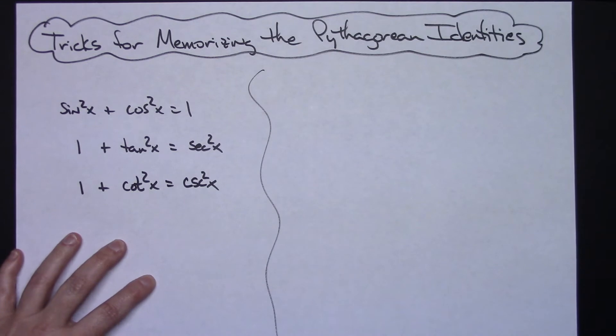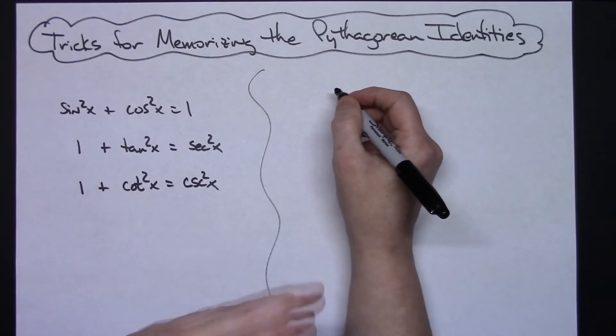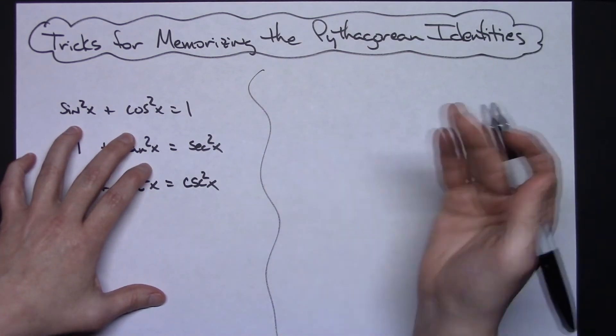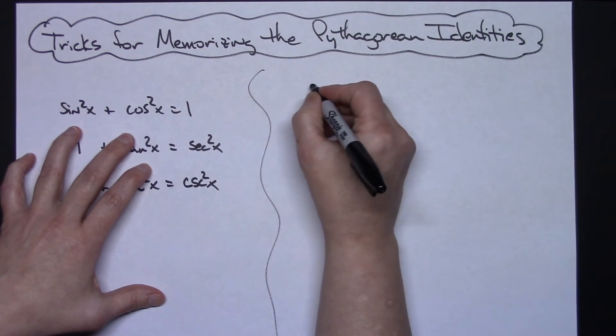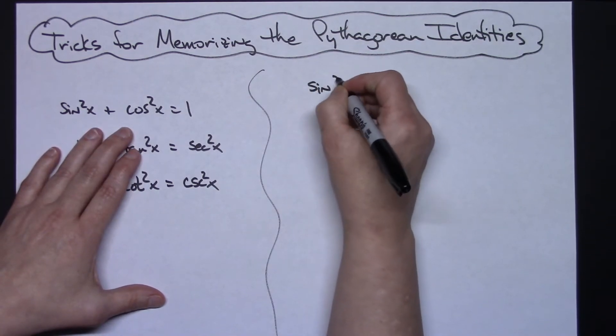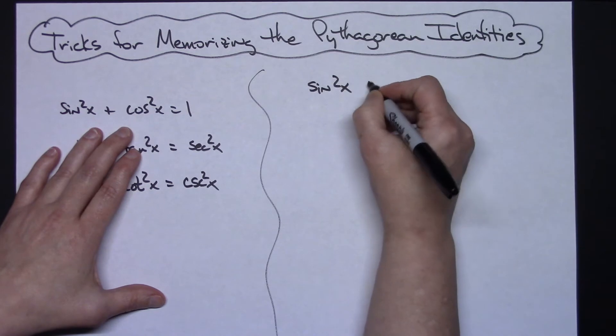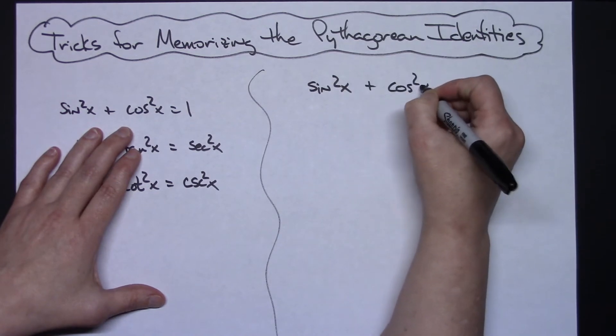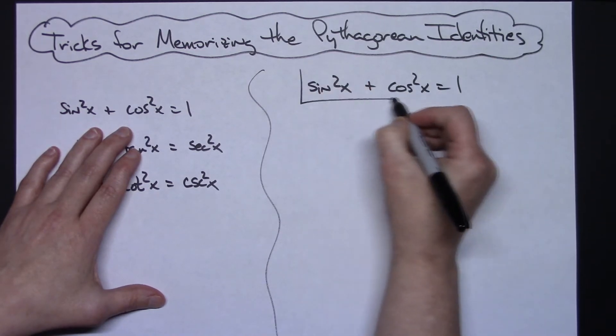Okay, now the second method, which isn't necessarily mine—I've seen it done in a lot of different places, websites, other videos and things. But we start with again that first one that we assume everyone knows: sine squared x plus cosine squared x equals 1. All right, that's the first one.